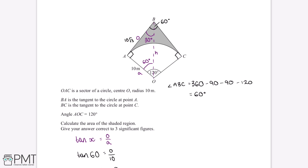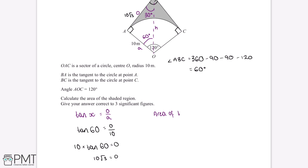Both of these triangles are exactly the same — they're just reflected down the centre line. So if we work out the area of the left triangle, we can double it to find the area of the full quadrilateral. The area of the triangle equals half base times height. The base is 10 metres and the height is 10√3 metres, so the area equals half multiplied by 10 multiplied by 10√3, giving us 50√3 metres squared.